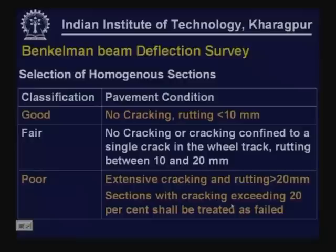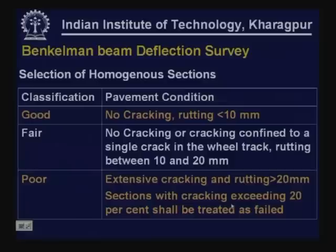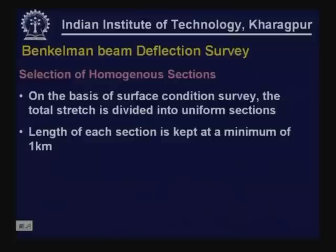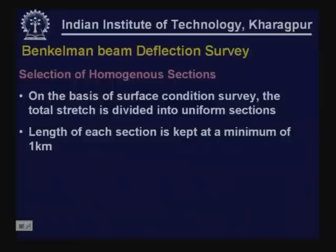For selecting homogeneous sections, pavements are classified as good (no cracking, rutting less than 10 mm average), fair (no cracking or cracking confined to single crack in wheel track, rutting 10–20 mm), or very poor (extensive cracking, rutting more than 20 mm). Sections with cracking exceeding 20% shall be treated as failed. Based on this surface condition survey, the total stretch is divided into uniform sections, with each section a minimum of 1 kilometer in length.